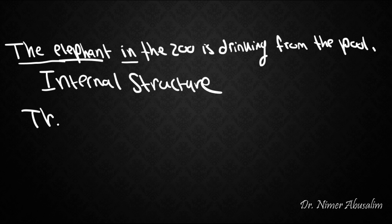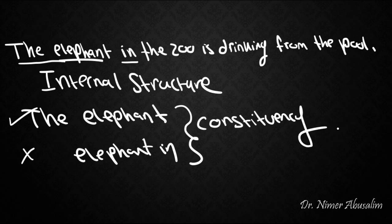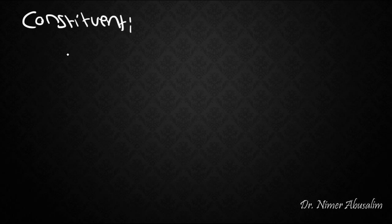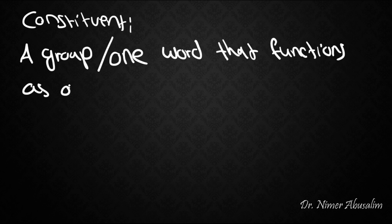It seems more natural to say 'the elephant' than to say 'elephant in.' Part of the reason why one seems natural and the other seems odd is the idea of constituency. A constituent is a group of words, or one word, that functions as one unit. Constituents are part of the internal structure of a sentence.